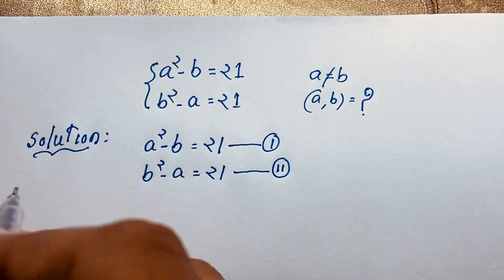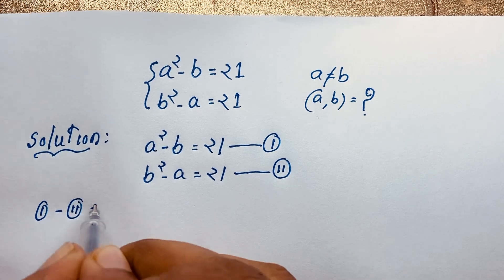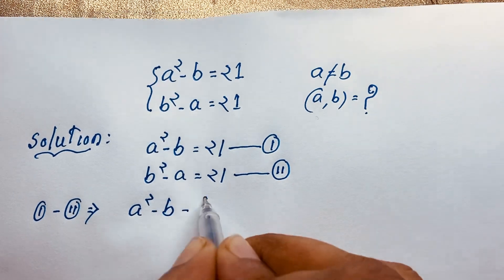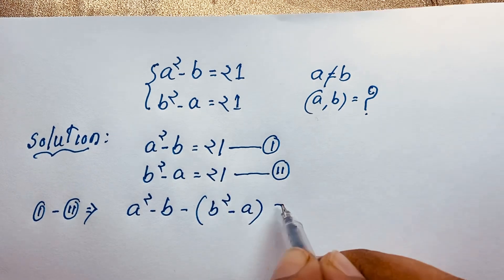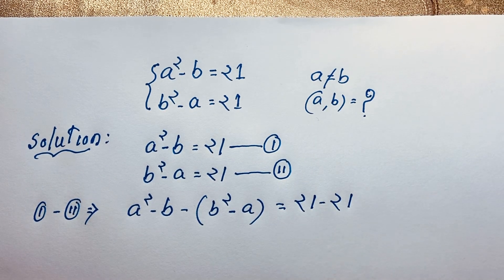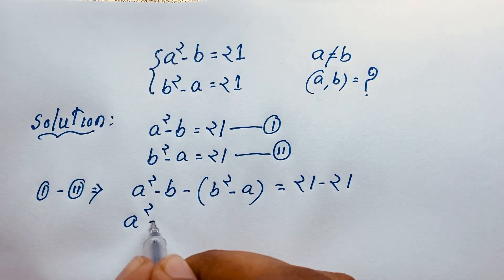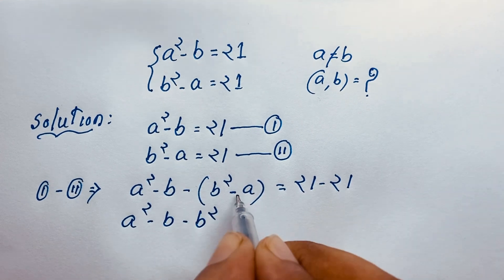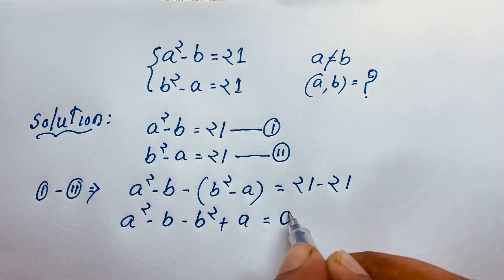Now I subtract our first equation from the second equation. You can see it will be: a squared minus b minus (b squared minus a) is equal to 21 minus 21. So we get a squared minus b minus b squared plus a equal to zero.